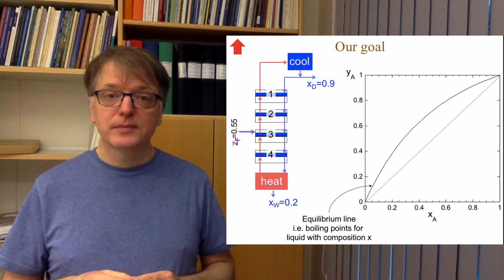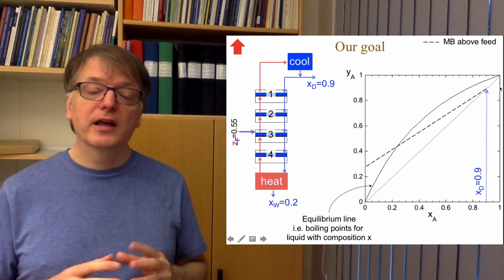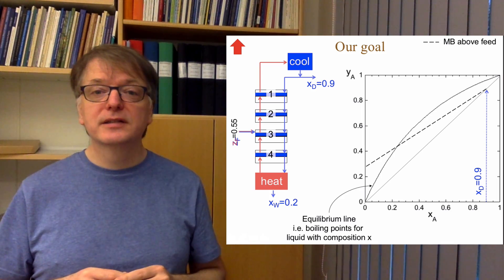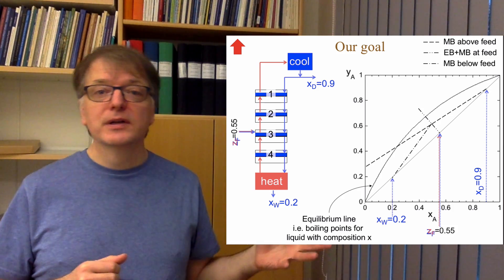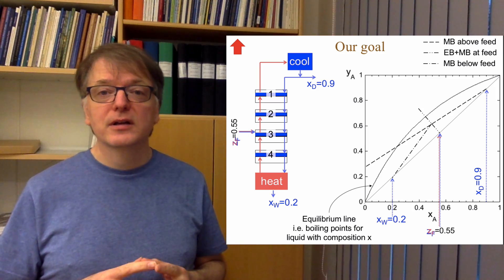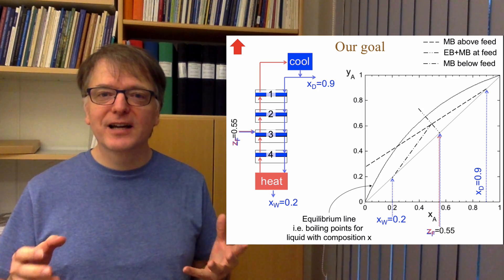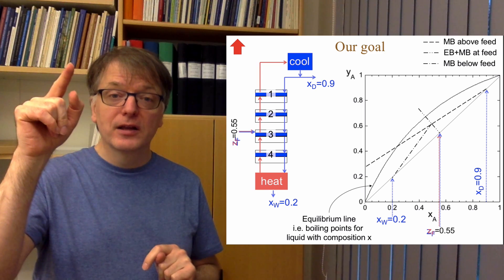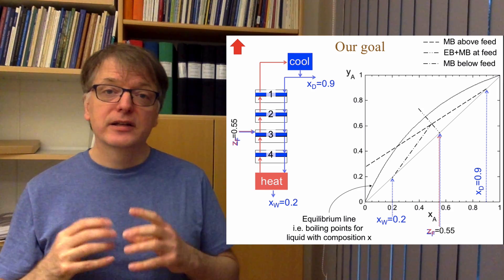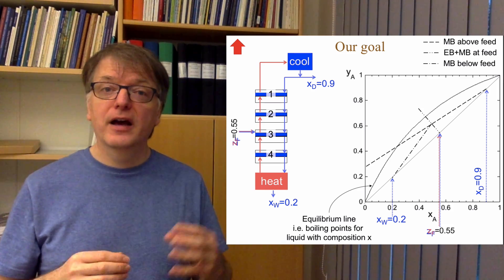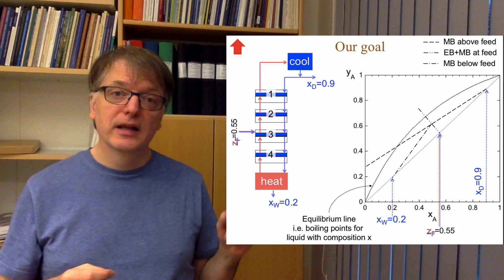Our goal is to draw these mass balances and the feed energy balance in an xy diagram. For the upper section, the upper operating line starts at the diagonal at x_D. For the feed, the Q line starts at the diagonal at z_F. And at the bottom, the lower operating line starts at x_W on the diagonal. It's a good exercise to prove for yourself that these three operating lines go through those respective points on the diagonal.